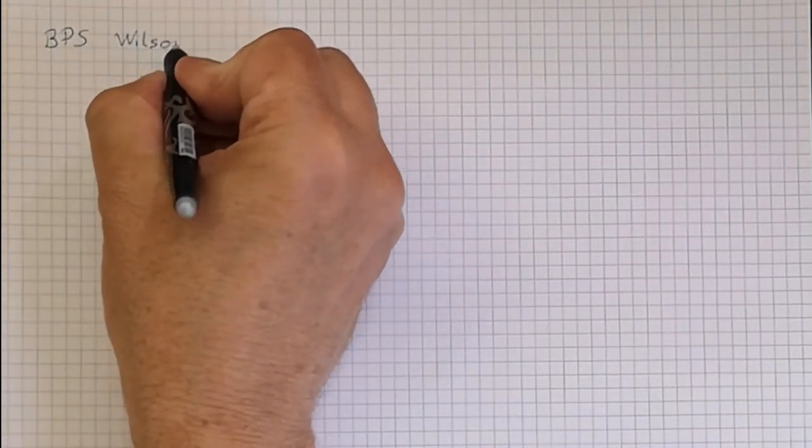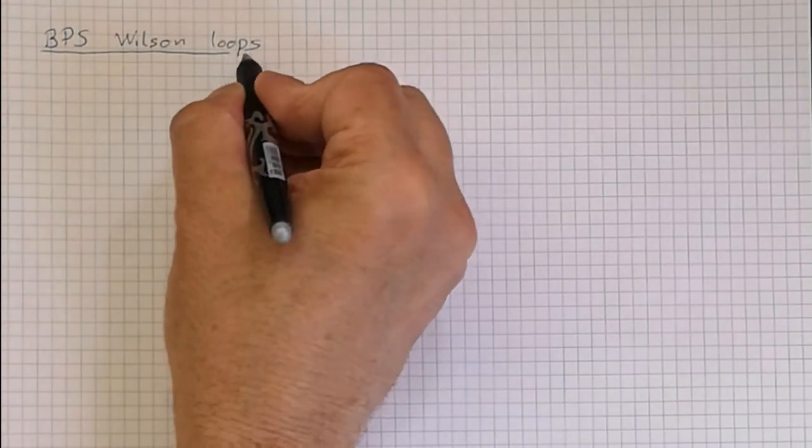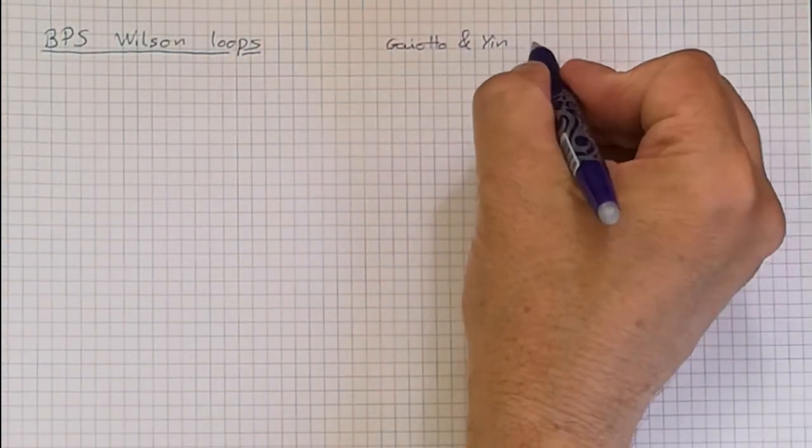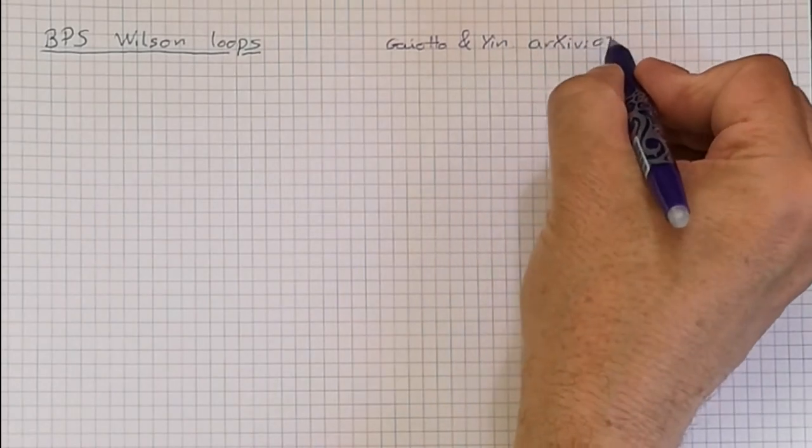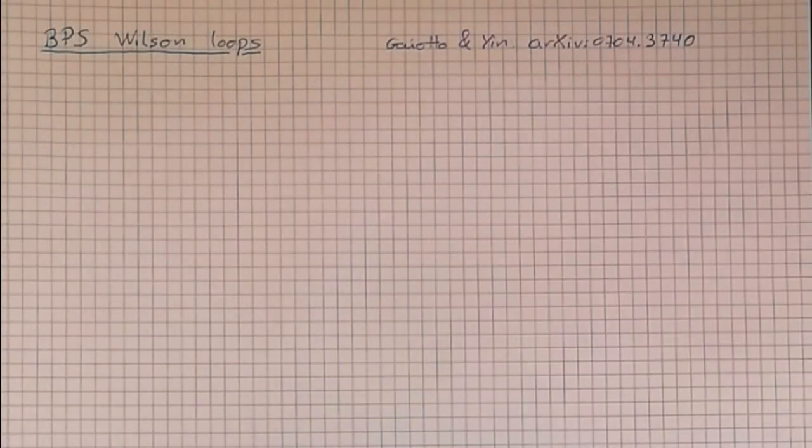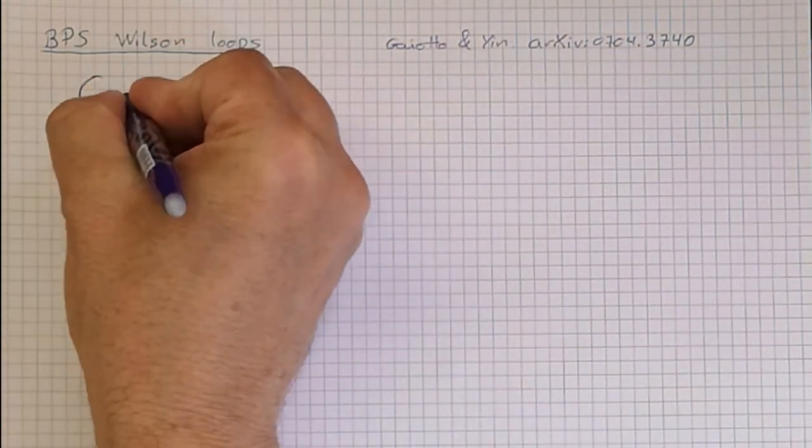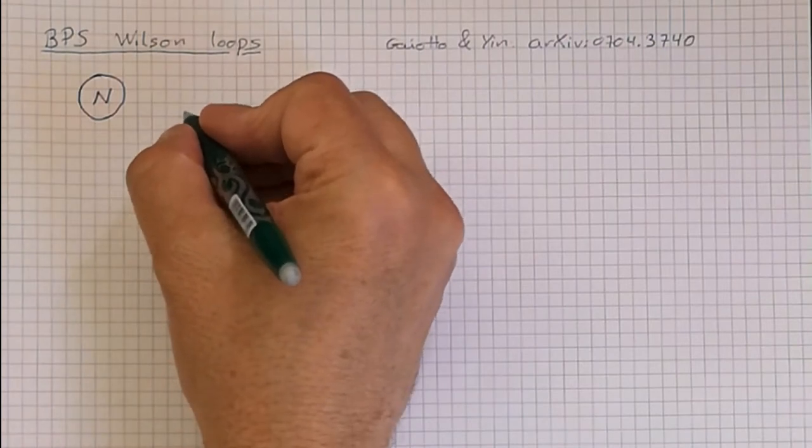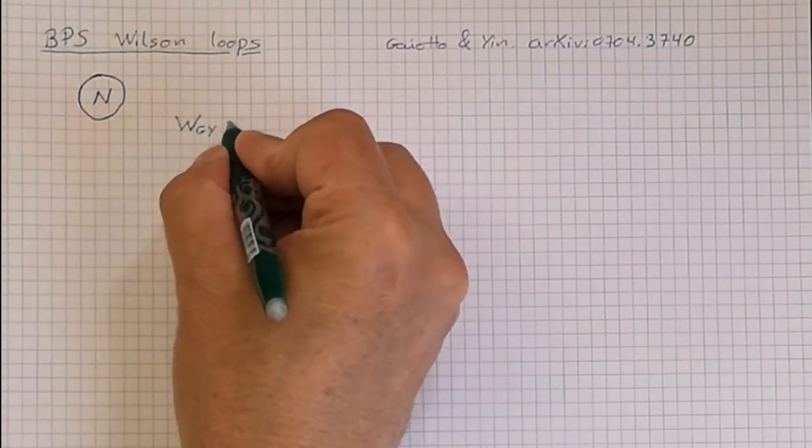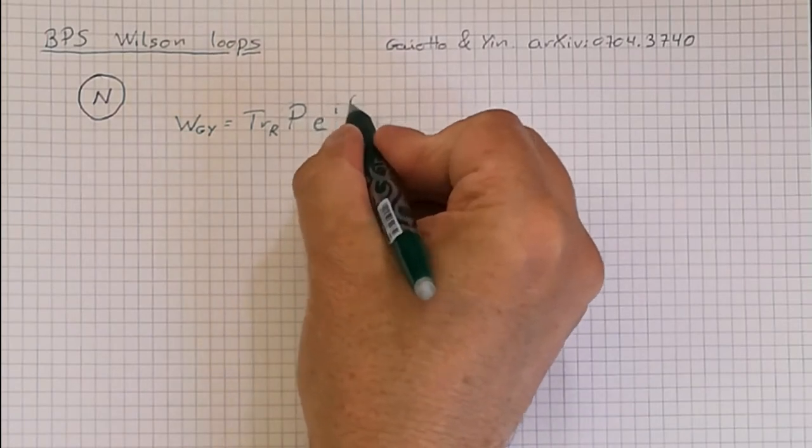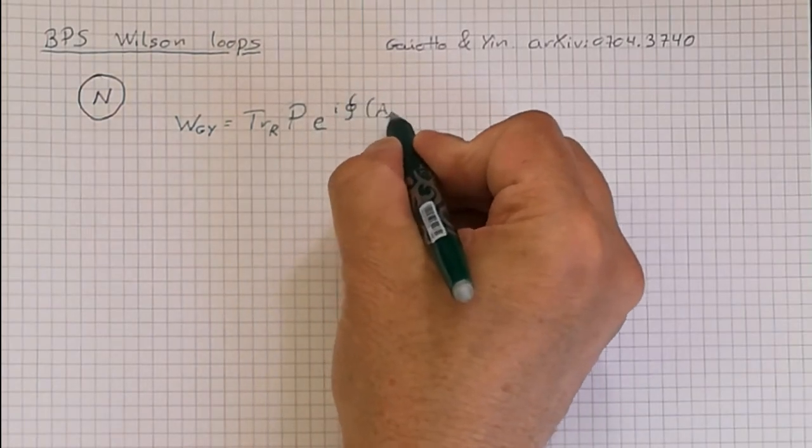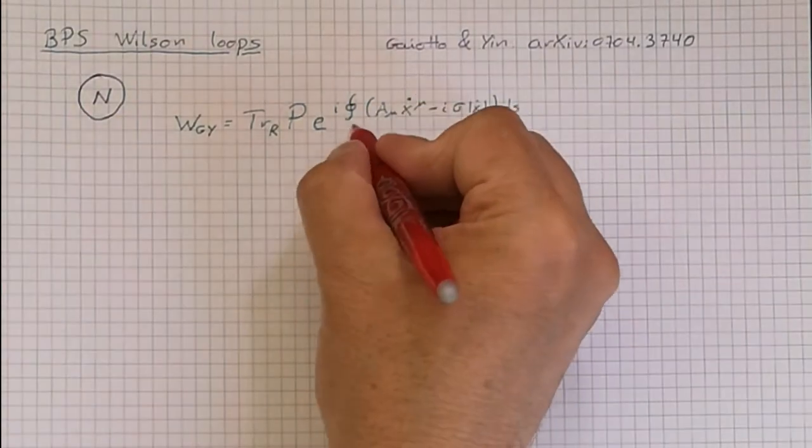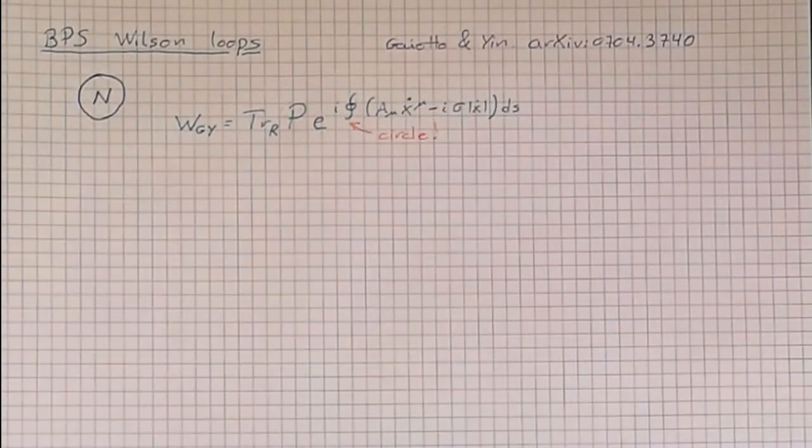BPS Wilson loops in 3D theories were first discussed by Gaiotto and Yin. I will consider a theory on the 3-sphere, and here the theory has a single vector multiplet. The main idea is to replace the gauge connection A with A minus i sigma, where sigma is the auxiliary field in the vector multiplet. And you define the Gaiotto-Yin Wilson loops as follows, where R is a representation of your gauge group UN.